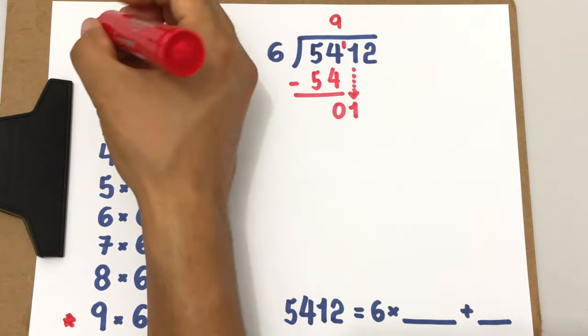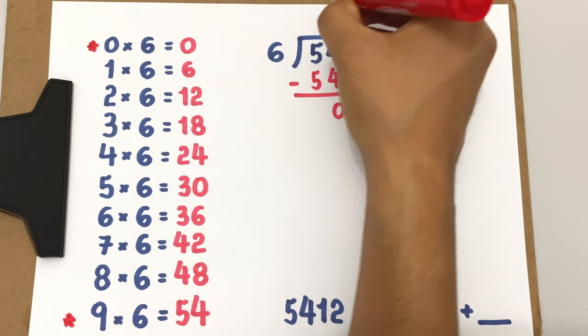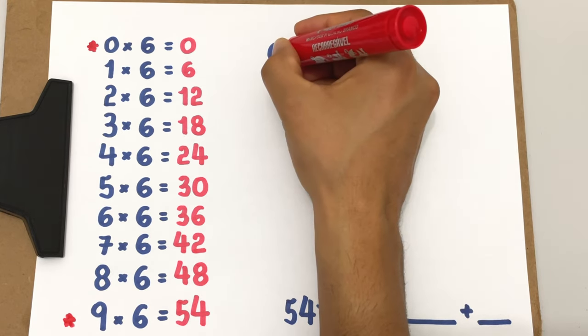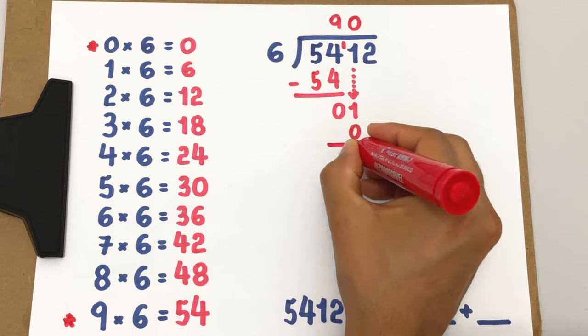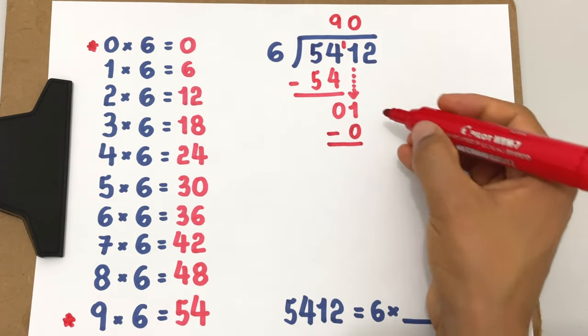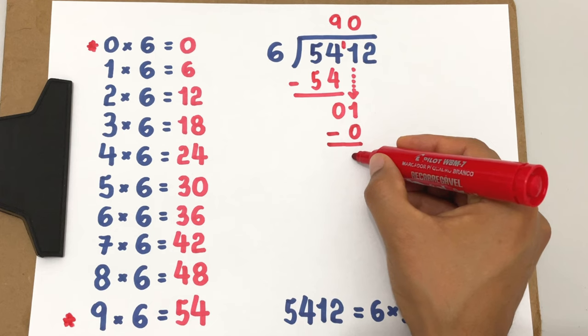So the number we are looking for now is 0. I write 0 here. 0 times 6 is 0, that's what I write here, and then we have an easy subtraction again because 1 minus 0 is still 1.